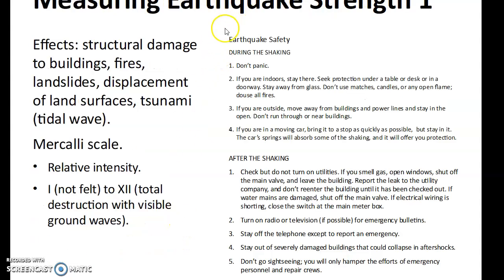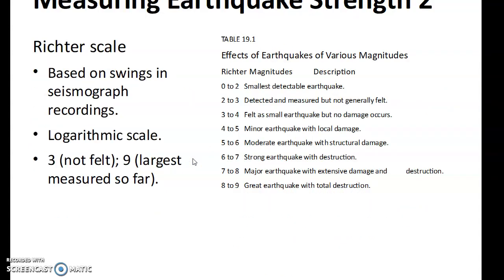Measuring earthquake strength: on a scale from 1, where nothing is felt at all, to 12, which is total destruction with visible ground waves. Earthquakes are measured on the Richter scale, which is based on the swings of the seismographic recording — it's a logarithmic scale. A magnitude 3 is not felt; 9 is the largest measured so far. The Richter scale gives you the magnitude, and we have earthquake safety as part of our safety program because there are possibilities of earthquakes here in Missouri as well.